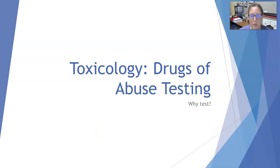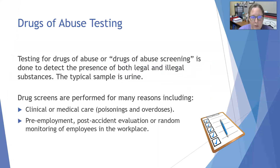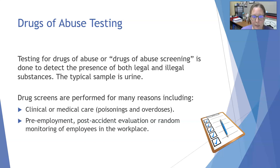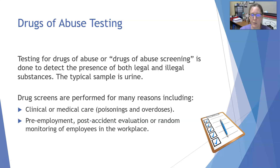Dr. A here with more toxicology basics. We're going to look at drug of abuse testing — specifically why we test. Testing for drugs of abuse, or what we call drugs of abuse screening, is done to detect the presence of both legal and illegal substances. The typical sample used is urine. Tests can be performed for many reasons, including clinical or medical care — for example, if somebody comes in unconscious and you want to know if they've taken anything, such as in poisoning and overdose cases.